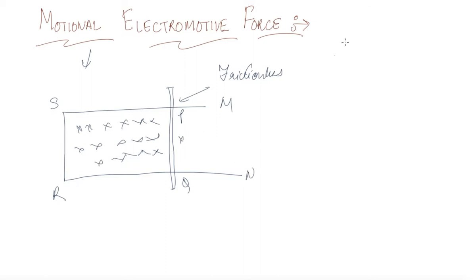So now what was magnetic flux for us? Magnetic flux was B into - if this is my length L, this is the rod of say length L, and if this is distance X - so magnetic field into area, that is L length into X. So this is my magnetic flux.